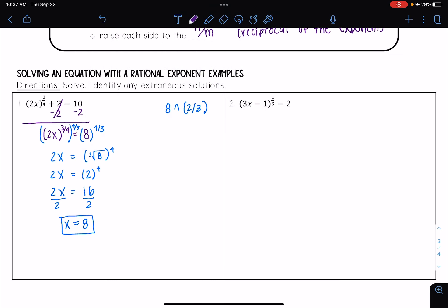Okay, let's try one more. So here I have 3x minus 1 raised to the 1 fifth power is equal to 2. Here my power is already isolated, so I can go ahead and raise each power to the reciprocal. The reciprocal of 1 fifth is 5 over 1, or in other words, just 5.